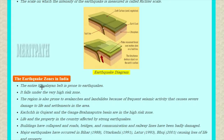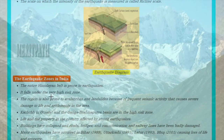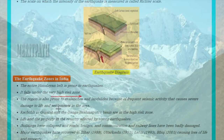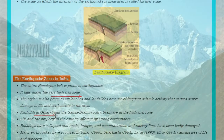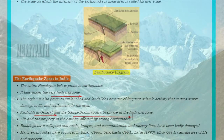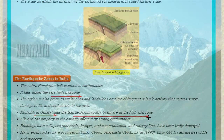Let us now learn about the earthquake zones in India. The mainland belt is prone to earthquakes and falls in a very high-risk zone. Kutch in Gujarat and the Ganga-Brahmaputra Basin are also high-risk zones.